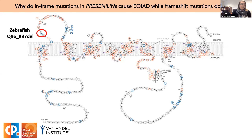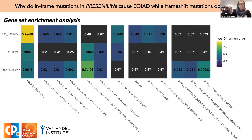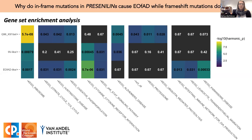Our group also generated another zebrafish EOFAD mutation in presenilin-1: Q96K97del, an in-frame two-codon deletion in the first luminal loop. When I compared the effects of Q96K97del to the T428del mutation on the brain transcriptome, only the energy-related effects — TCA cycle and oxidative phosphorylation — occurred in both presenilin-1 EOFAD mutations. Notably, the KEGG gene set for Parkinson's disease did not reach statistical significance in the Q96K97 mutants, which is reassuring since our T428del mutation models a patient who showed Parkinson's symptoms before dementia onset, supporting the relevance of the zebrafish model.